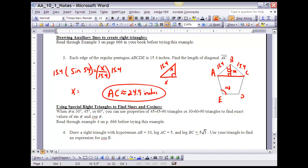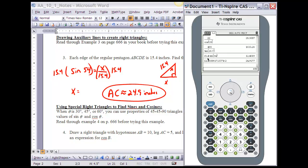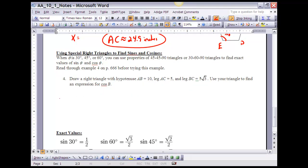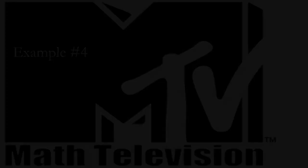That means that AC is approximately 24.9 inches. So we can use trigonometry to solve for lengths. What I'd like to do now is look at special right triangles and using sine and cosine to come up with lengths using special right triangles. So when theta is 30, 45, or 60 degrees, you can use properties of 45-45-90 triangles, or 30-60-90 degree triangles to find exact values of the sine of theta and the cosine of theta. You might want to take a minute or two right now to read through example 4 on page 666 before trying this particular example.